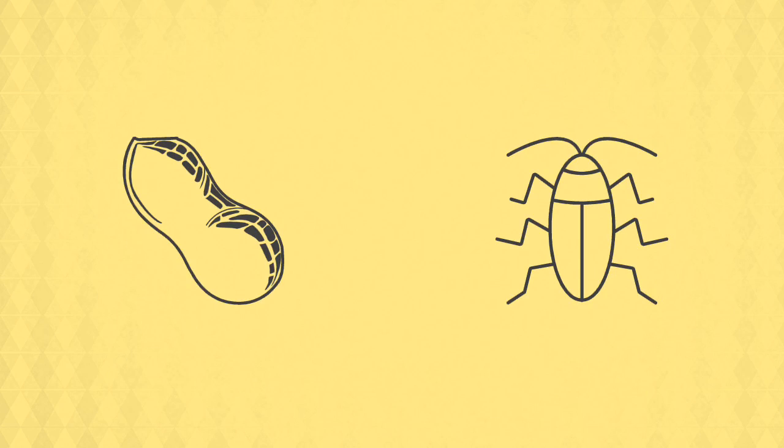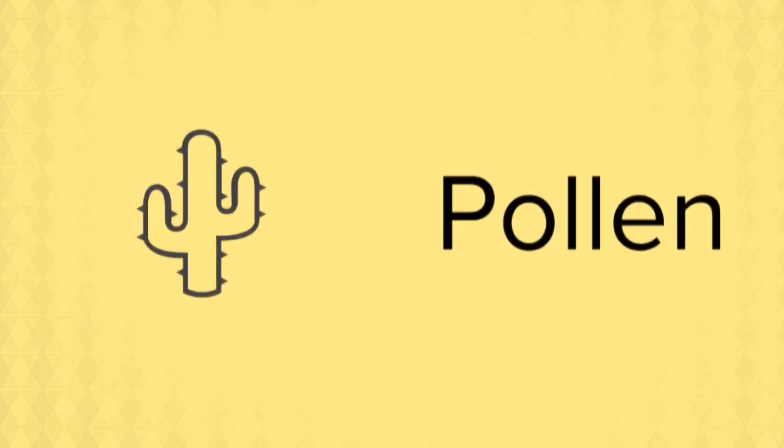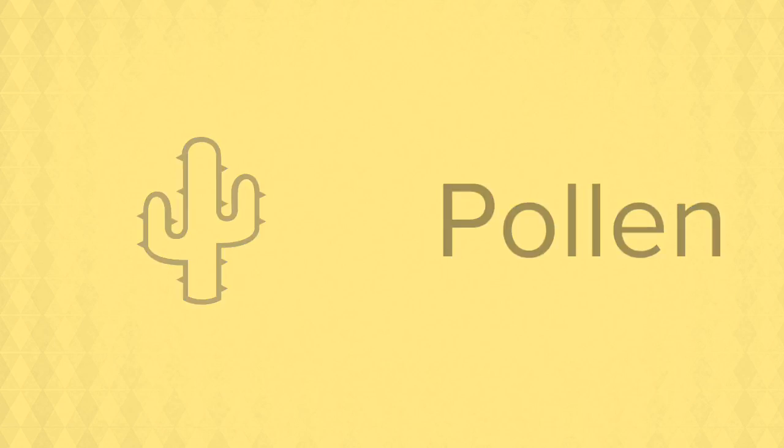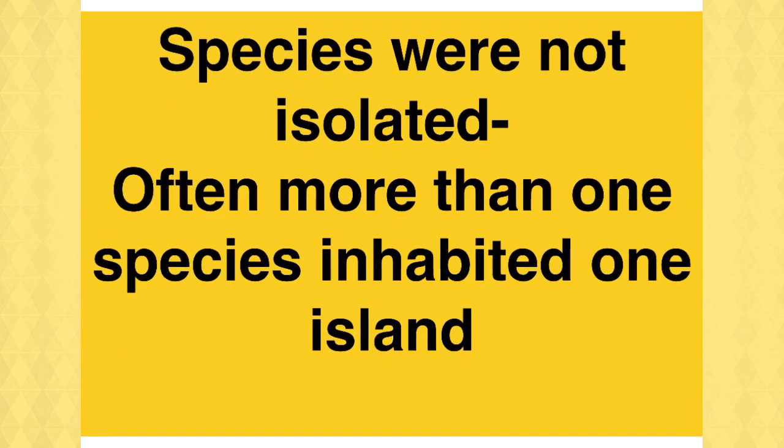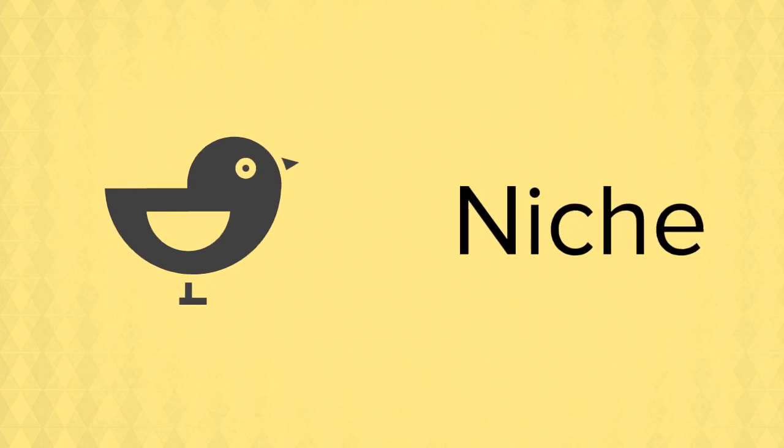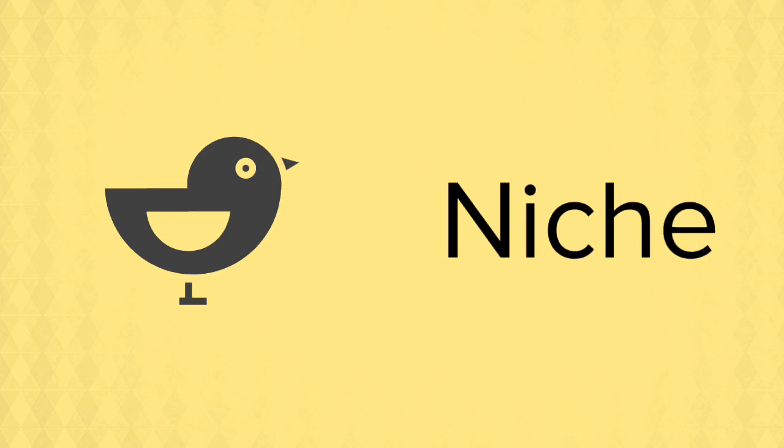Some beaks were adapted to splitting hard seeds, others were adapted to eating particular insects, others were well suited to getting the pollen out of particular cactus plants. Many of the individual islands were home to a number of species of finch all living together in harmony. They lived in harmony together because they occupied different niches. Their beaks enabled them to feed off different foodstuffs and so they weren't in competition with each other.